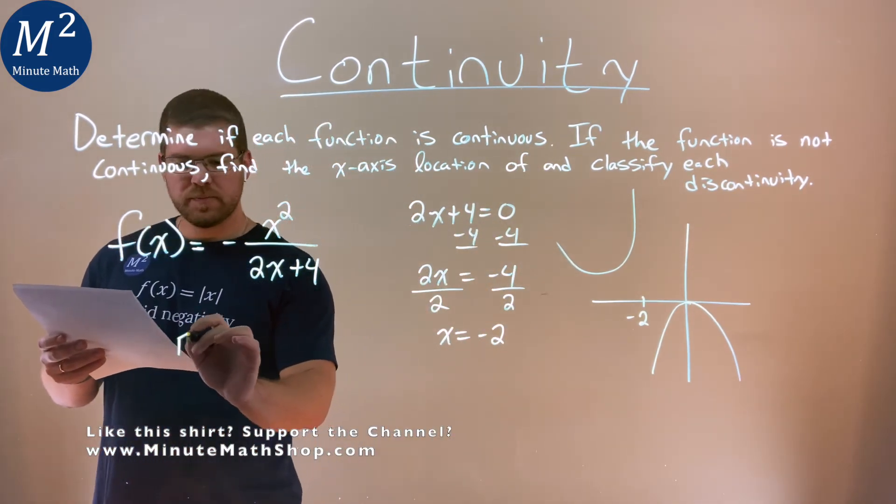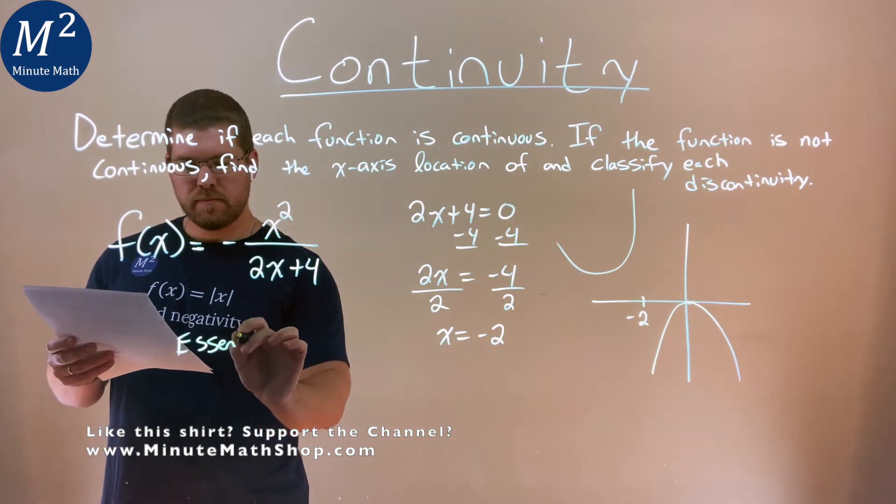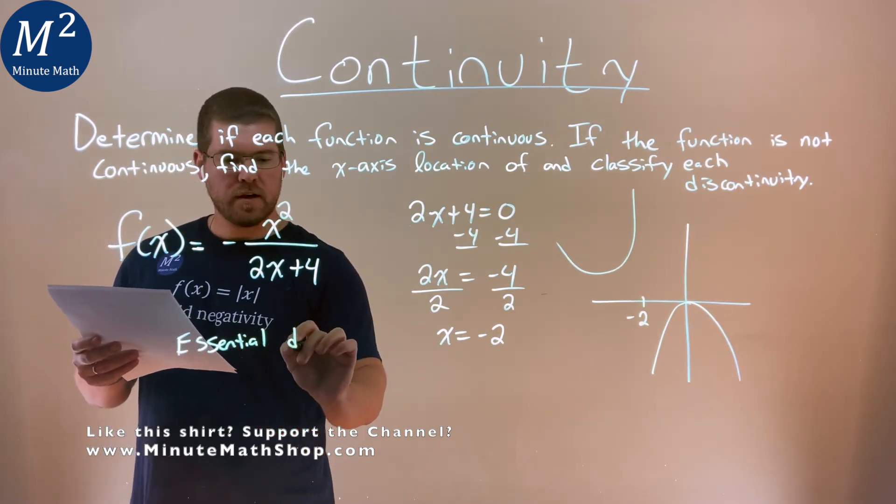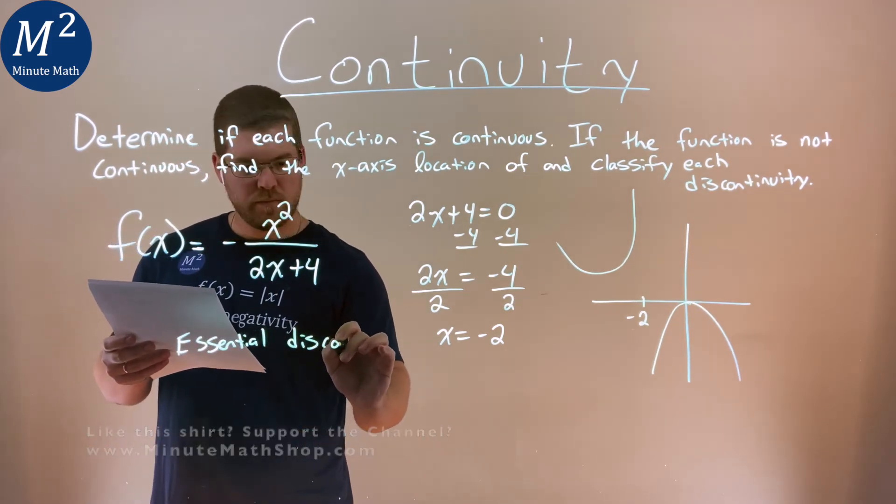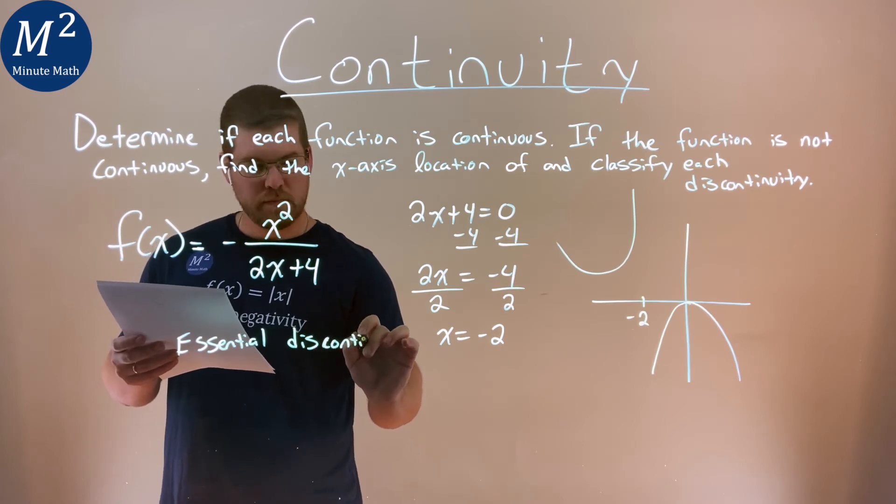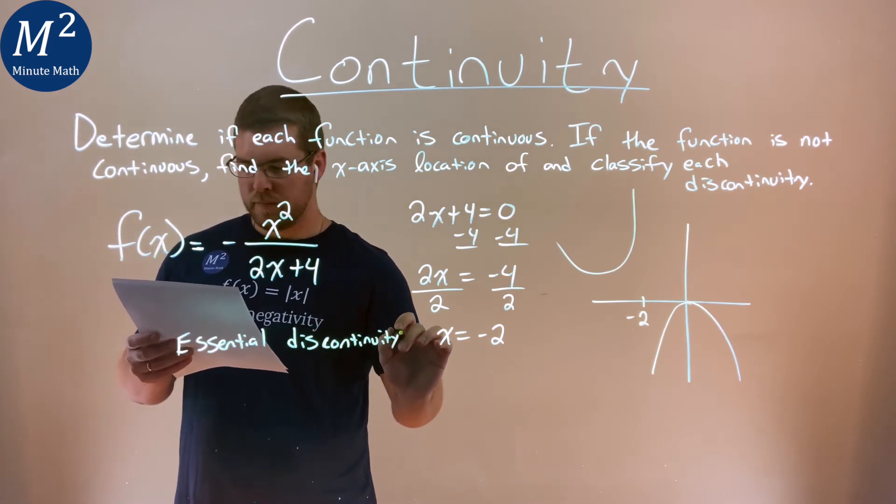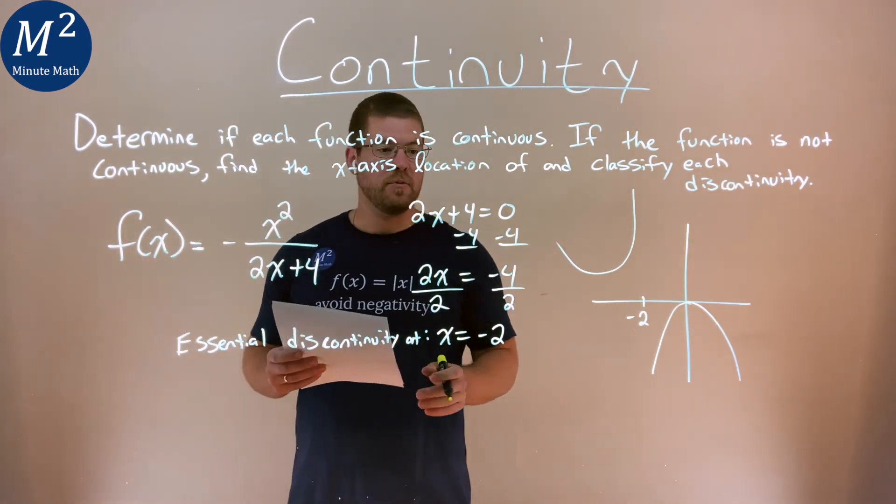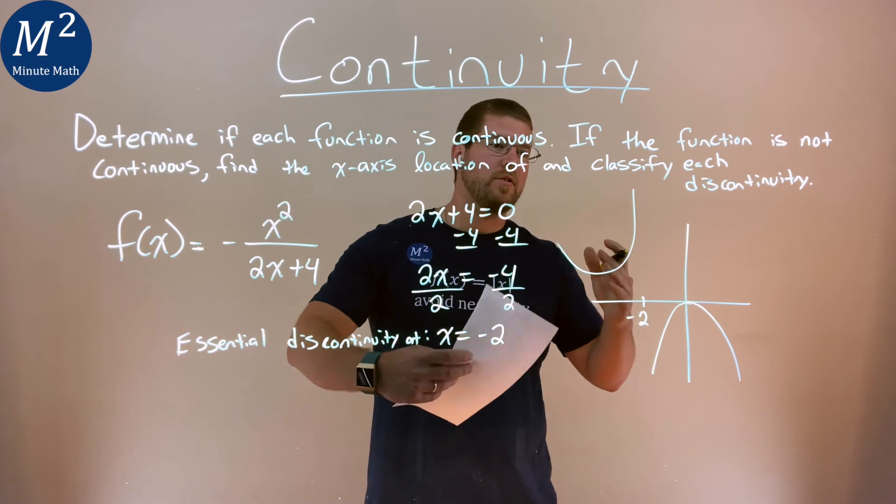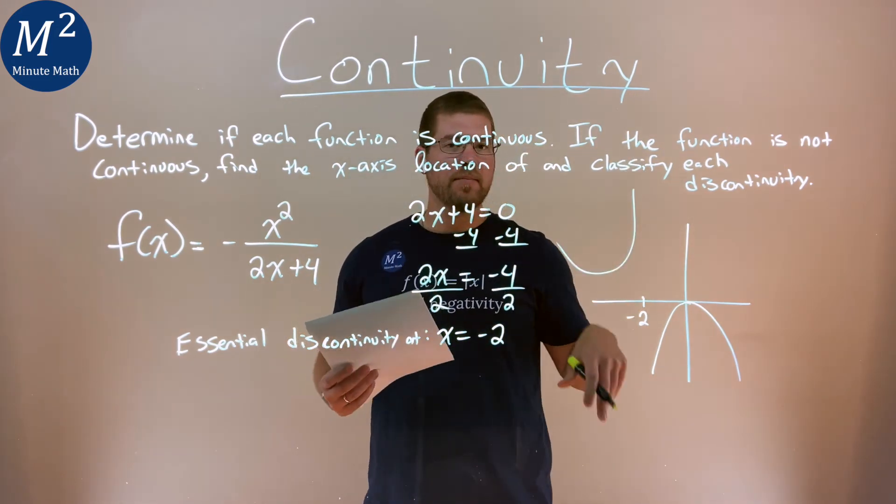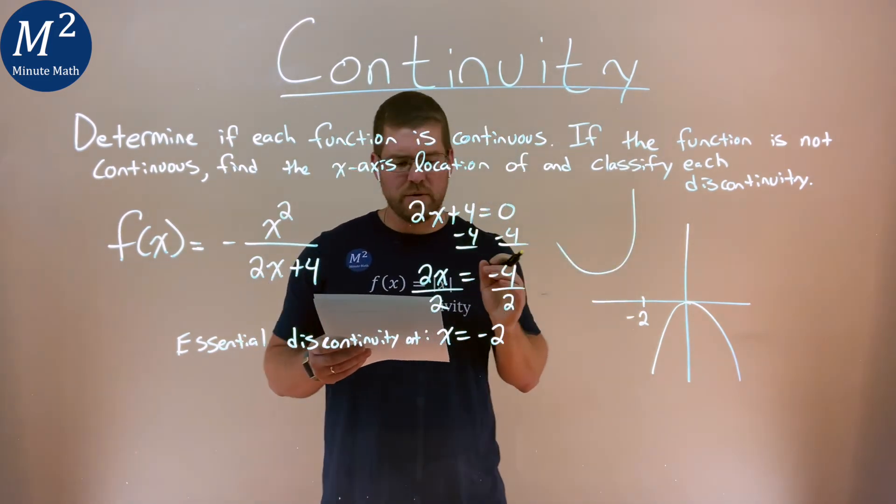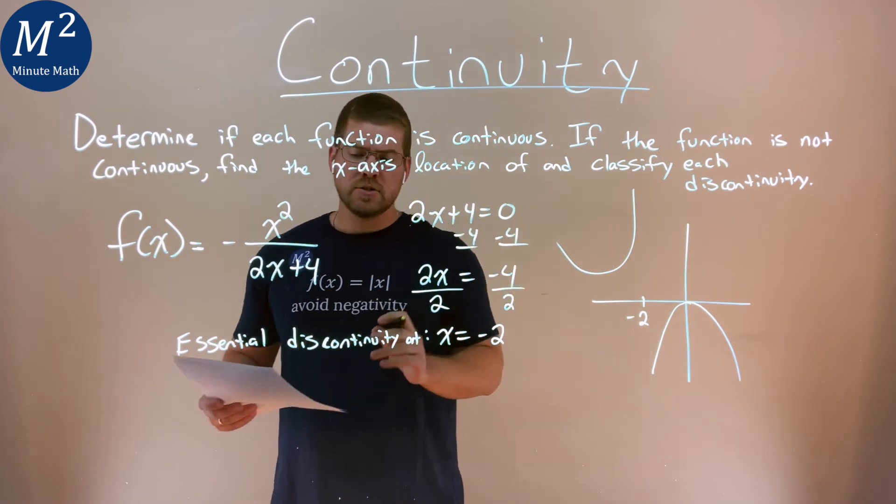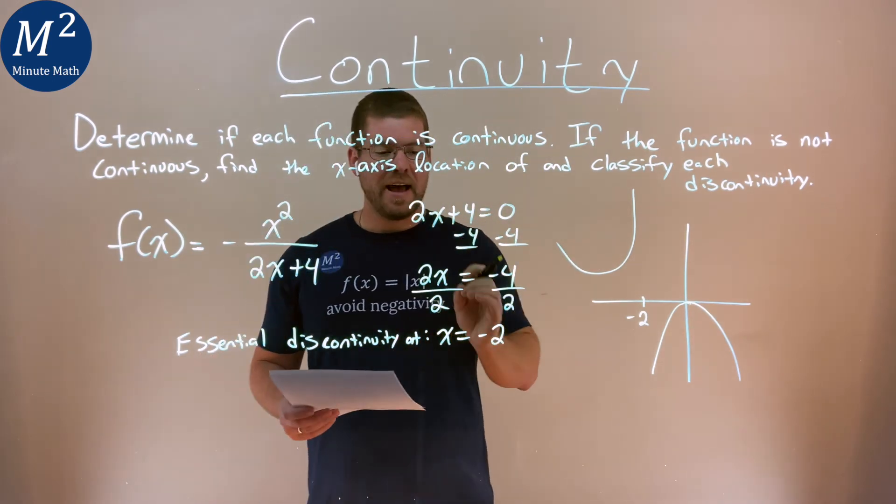And we would actually call this an essential discontinuity at what we have here at x equals negative 2. So essential discontinuity, where it's like a big jump going on right there. And it's not just a little open circle that's going on. So we have an essential discontinuity at x equals negative 2.